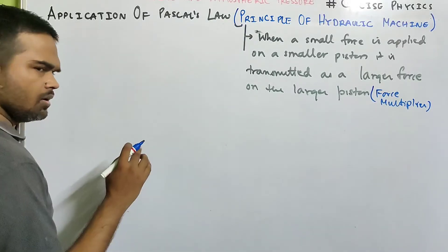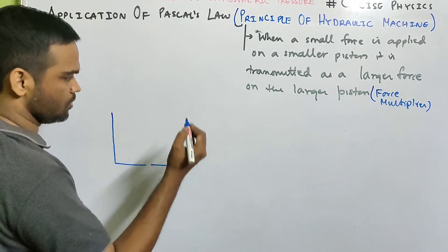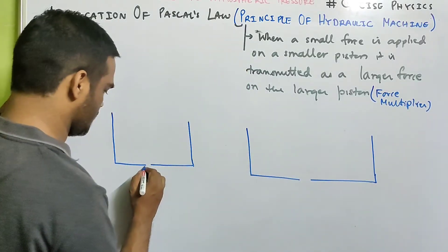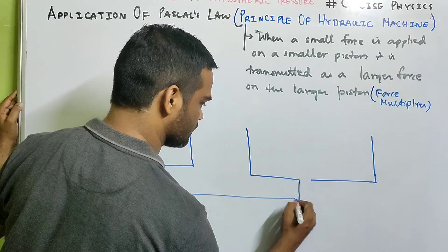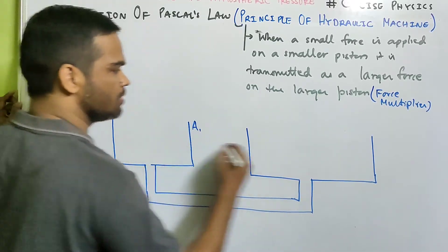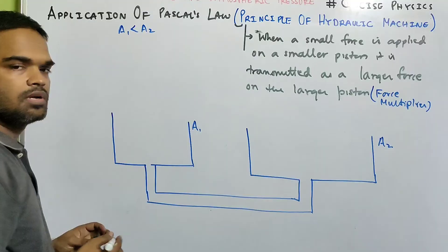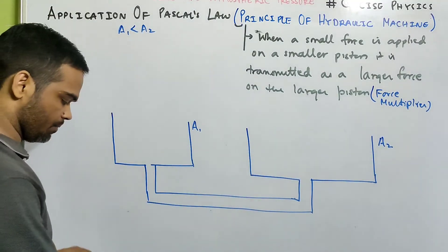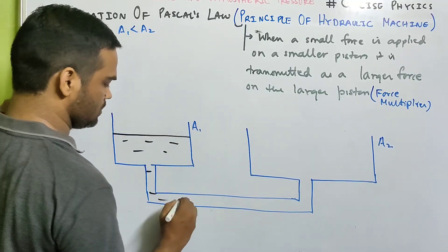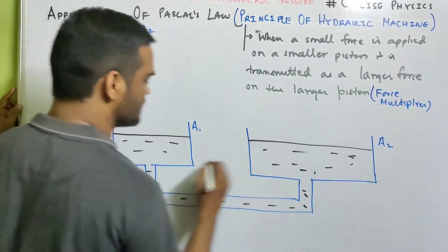Suppose we take two cylindrical vessels which are connected to each other. One is a smaller vessel, the other is a larger vessel. They are connected with a tube. Look carefully, so they are connected with a tube. Suppose this has a cross section area of a1 and this has an area of a2. Of course a1 is less than a2 because the diameter of this cylindrical flask is less as compared to this one. Now look carefully. We fill liquid till here, suppose we fill water till this height.